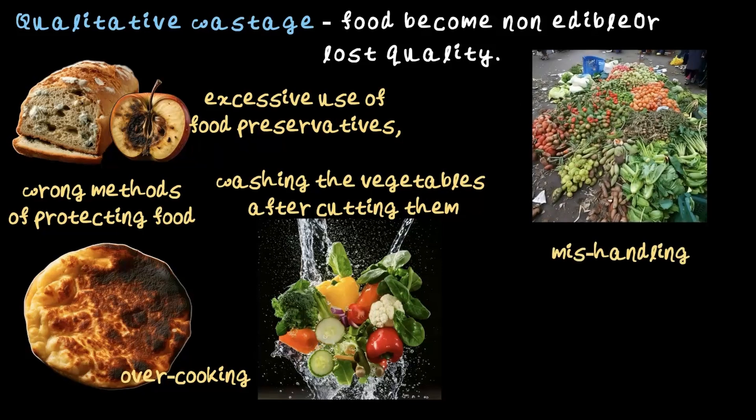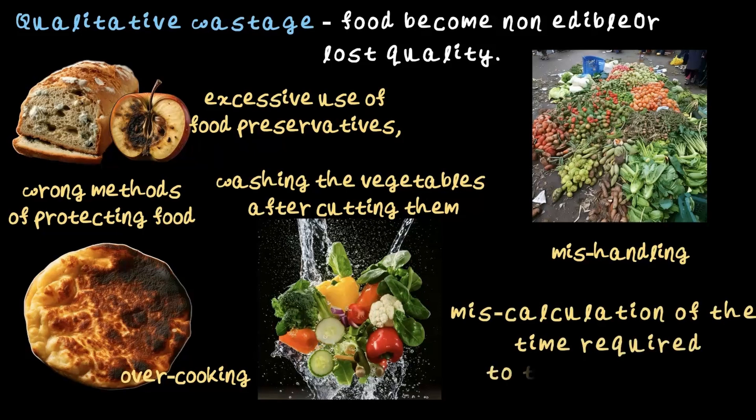Then there is mishandling. Sometimes perfect food gets spoiled because it isn't handled properly. For example, if grains or vegetables aren't stored properly or are left open, they can absorb moisture and get attacked by insects or microorganisms — once that happens, they are no longer good to eat. Finally, miscalculating the time needed to transport food can also cause waste. Take milk or fish, for example: if not transported quickly enough or stored at the right temperature, it can spoil before it reaches the consumer.